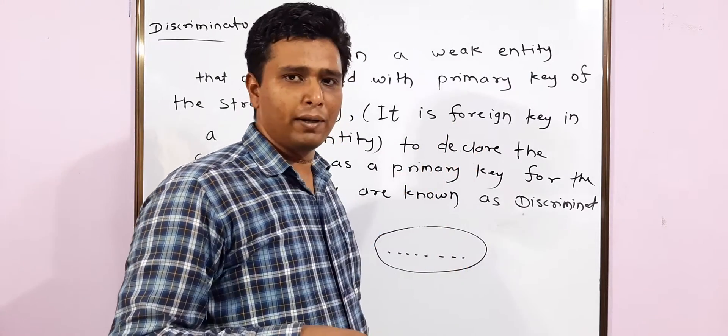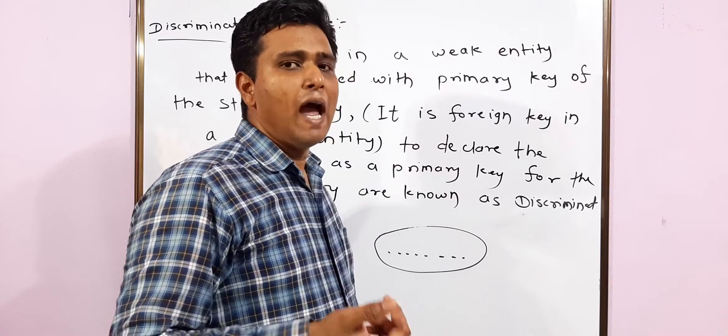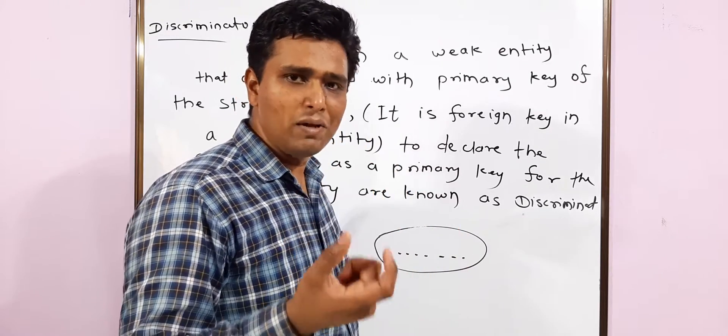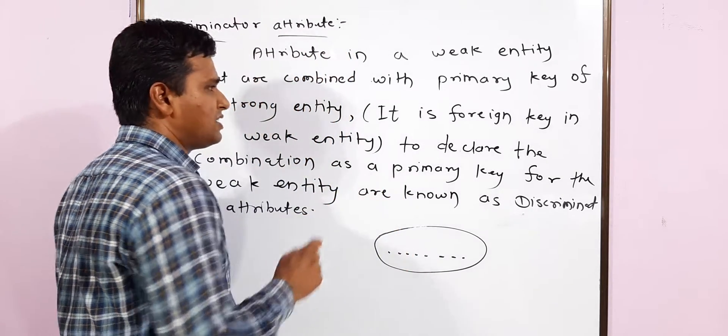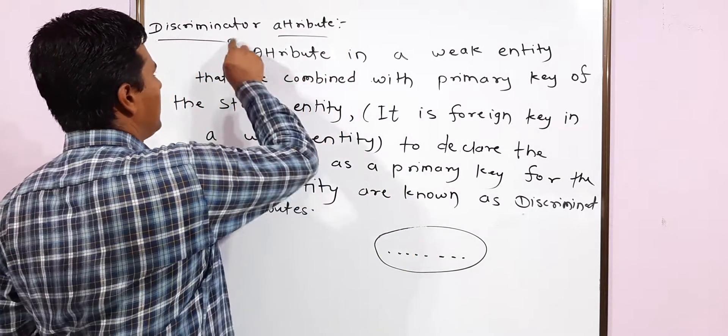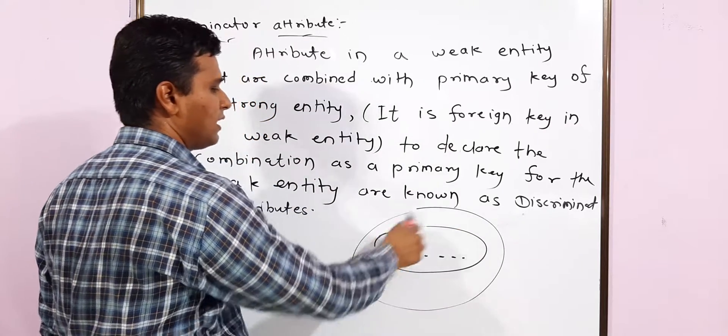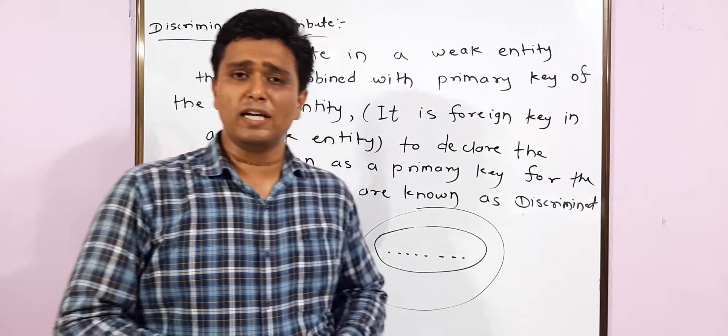This will be like a foreign key in our own table. So we will take that primary key and combine it with our weak key. That combination is called as discriminator attribute. This combination is called discriminator attribute.